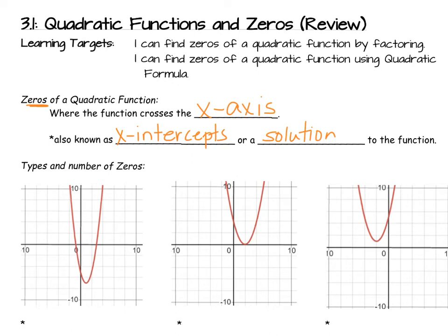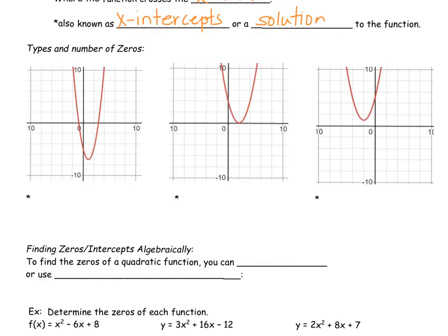A zero of a quadratic function is defined where the function crosses the x-axis. We also call them x-intercepts or a solution - what we get when we solve a function. There are three different types of answers we'll get when we solve quadratic functions. It's possible that the quadratic function can cross the x-axis at two locations. We would define that as two real solutions. Sometimes, the vertex of the quadratic function is right on the x-axis, which means there's only one point that touches the x-axis and it has one real solution.